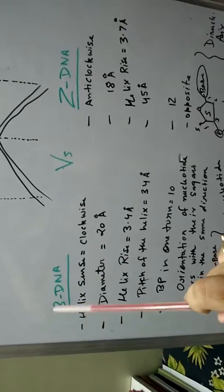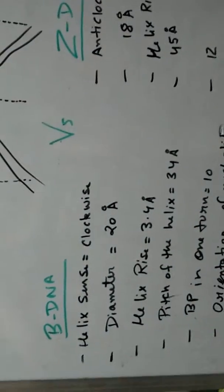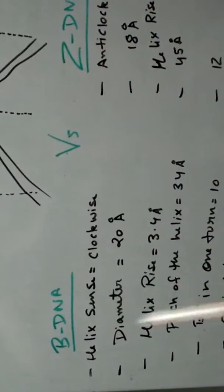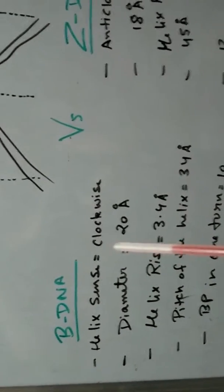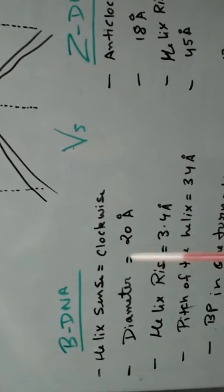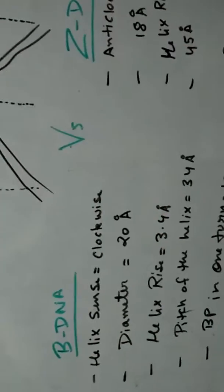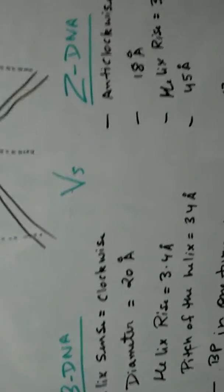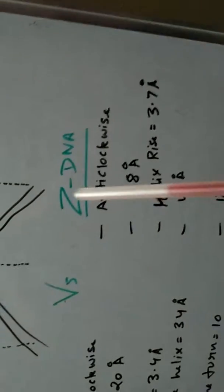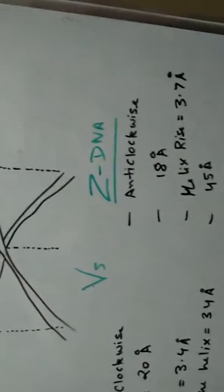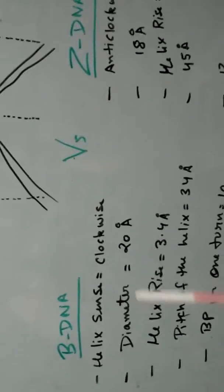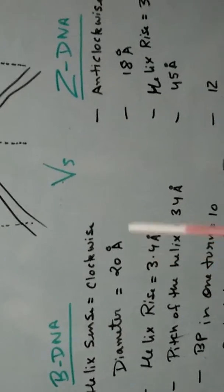So B-DNA, Z-DNA. First, B-DNA helix sense or the direction of rotation of these strands is clockwise in case of B-DNA, that is right-hand side turn. But in case of Z-DNA it is anti-clockwise or left-hand side rotation. Diameter in B-DNA is 20 angstroms, but it is 18 in Z-DNA.